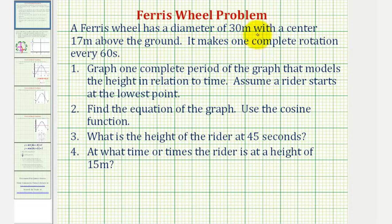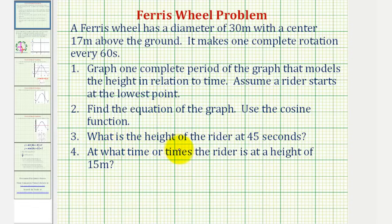A ferris wheel has a diameter of 30 meters with a center 17 meters above the ground. It makes one complete rotation every 60 seconds. We want to graph one complete period of the graph that models the height in relation to time. Assume a rider starts at the lowest point. Then find the equation of the graph using the cosine function. We also want to know what the height is of the rider at 45 seconds and at what time or times the rider is at a height of 15 meters.